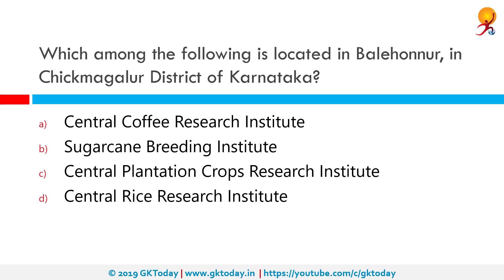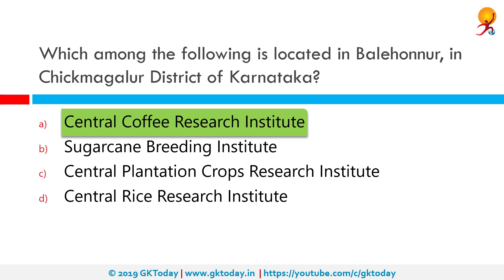Which among the following is located in Belhornmoor in Chikmagalur district of Karnataka? The correct answer is the Central Coffee Research Institute. It was established during 1925 and is involved in intensive research in disciplines of plant breeding, agronomy, agricultural chemistry and soil science, plant physiology, pathology, entomology and post-harvest technology.